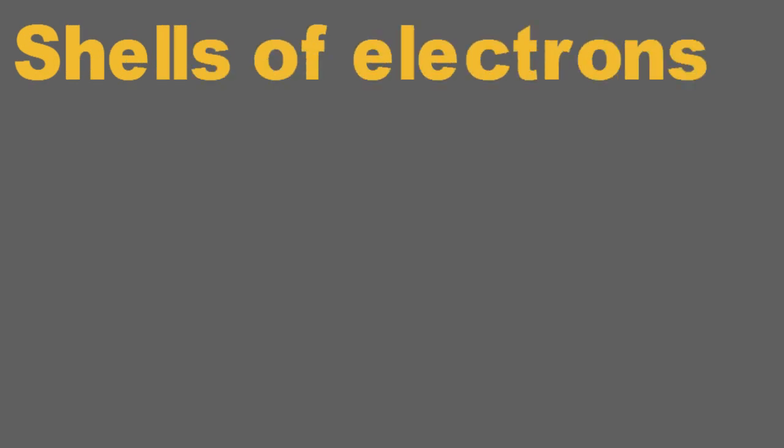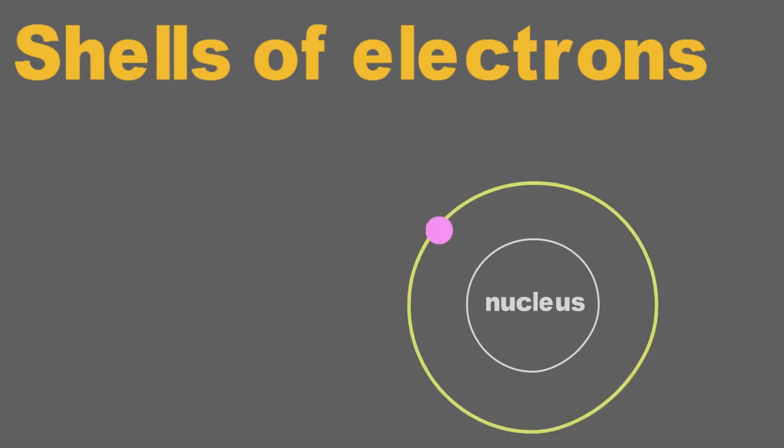Hello friends, today we will see what are shells of electrons. Every atom has a nucleus at its center and electrons revolve around it in fixed shells. Let's understand the concept of shells in much more detail.